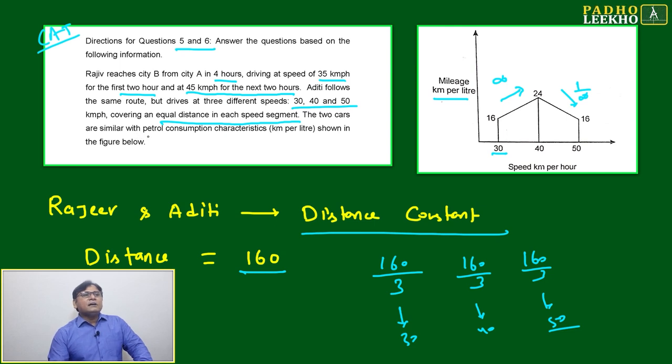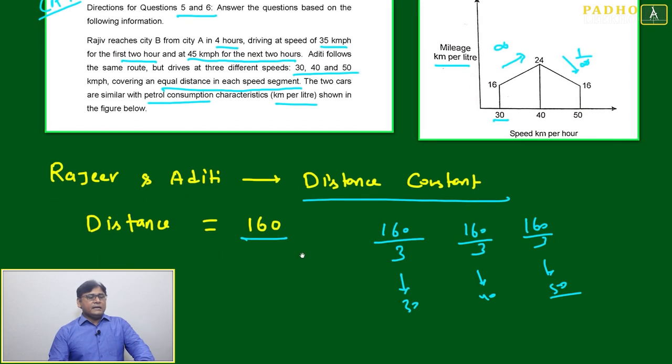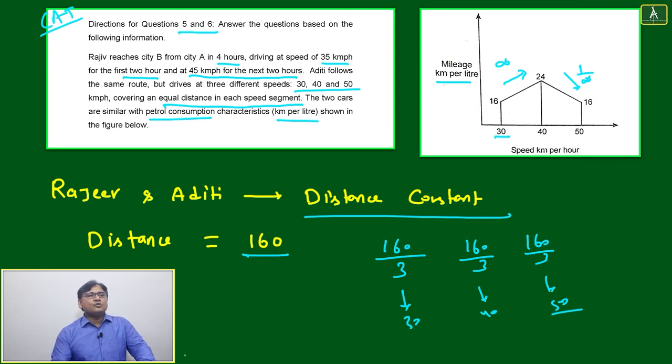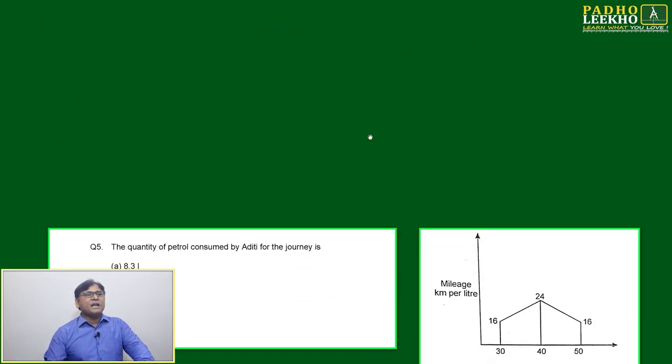If the two cars are similar with petrol consumption - consumption of petrol is same, like kilometer per liter. That is your mileage. In one liter, how many kilometers will go? That will give you the mileage. Then based on this data, distance total is 160. Distance is constant for Rajiv and Aditi. Rajiv and Aditi are going by the same route, means the same distance they will cover. Rajiv is going two hours with 35 kilometer per hour and next two hours 45 kilometer per hour. Aditi is going - whatever distance is there, she has divided in three equal parts, and each distance part is going with the speed of 30, 40, and 50 respectively.